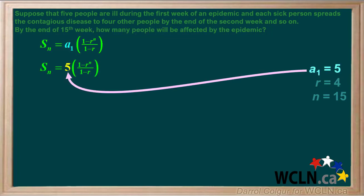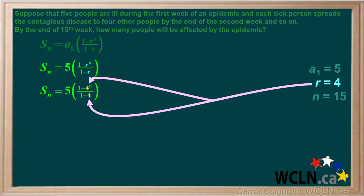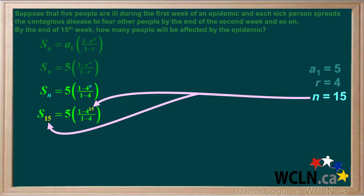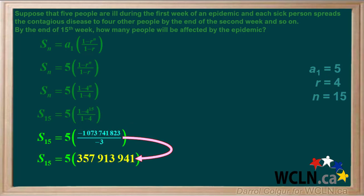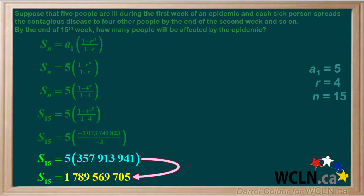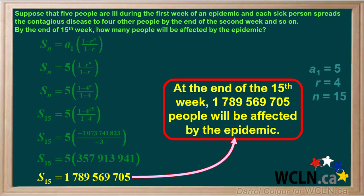We'll put in five for the first term A1, four for each R in the formula, and 15 for each N in the formula. Using a calculator, 1 minus 4 to the 15th over 1 minus 4 gives us the ratio shown in yellow. Working out this ratio gives us 357,913,941. Multiplying this by five gives us the sum S15 shown in yellow. So at the end of the 15th week, 1,789,569,705 people will be affected by this epidemic.